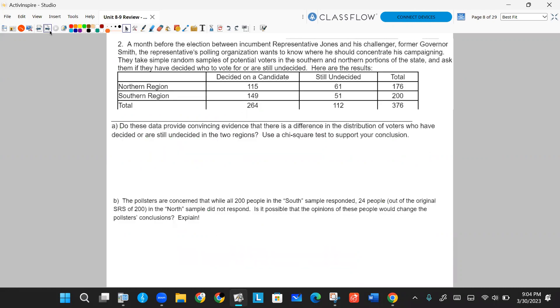Here's the question. A month before the election between incumbent Representative Joins and his challenger, former Governor Smith, the Representative's polling organization wants to know where he should concentrate his campaigning. They take simple random samples of potential voters in the southern and northern portions of the state and ask them if they have decided who to vote for and who are still undecided. The results are in the table below. This table is nice. It gives totals.